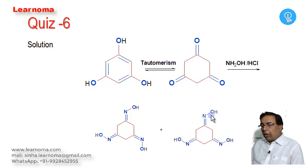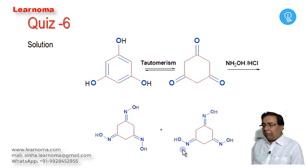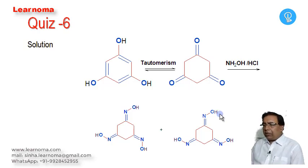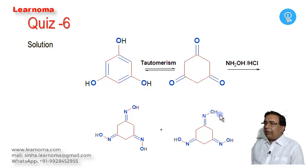If we consider any other option, it will be identical to one of these. For example, if we consider two OH groups going in cyclic fashion with one OH group opposing it, it maps to the same structure. This is a very fair question for IIT JEE, or for students preparing for NET or civil services. Thank you.